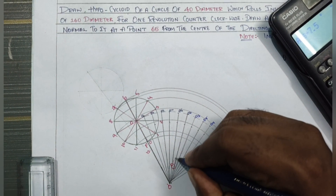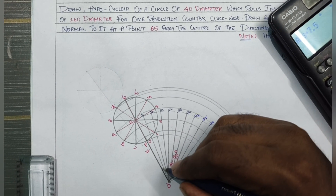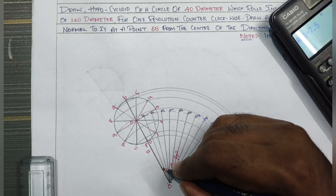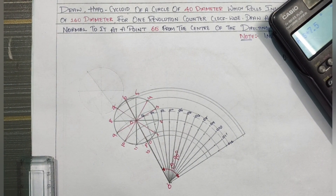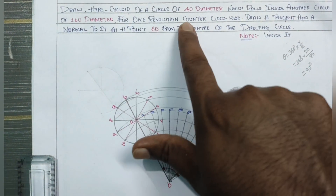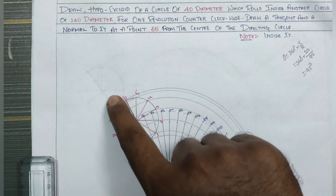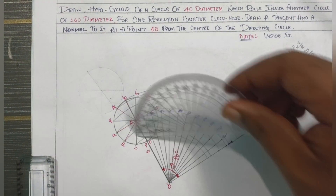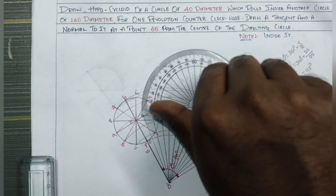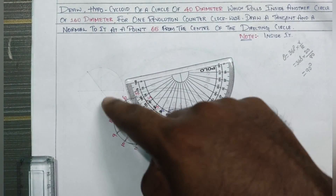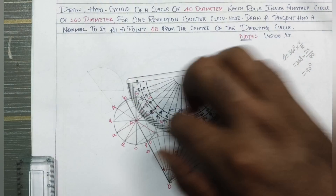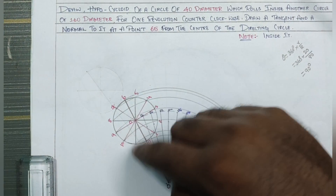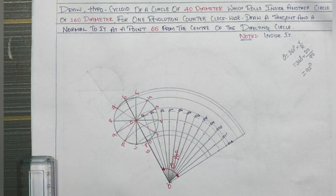Since the problem says one revolution counterclockwise, we reverse the direction. Theta equals 90 degrees, and for counterclockwise we reverse the order — so turn from 0 to 12 steps in reverse.